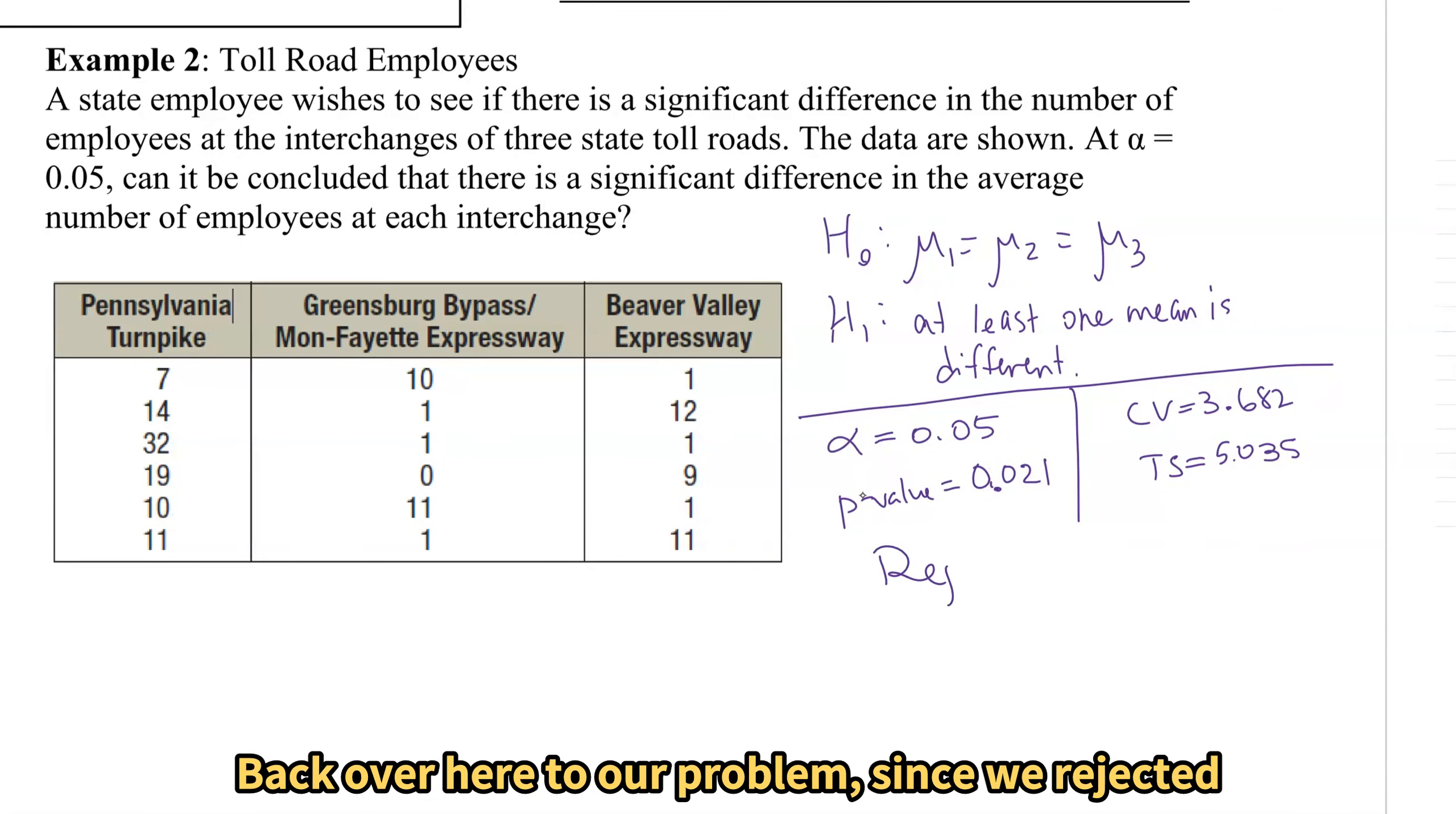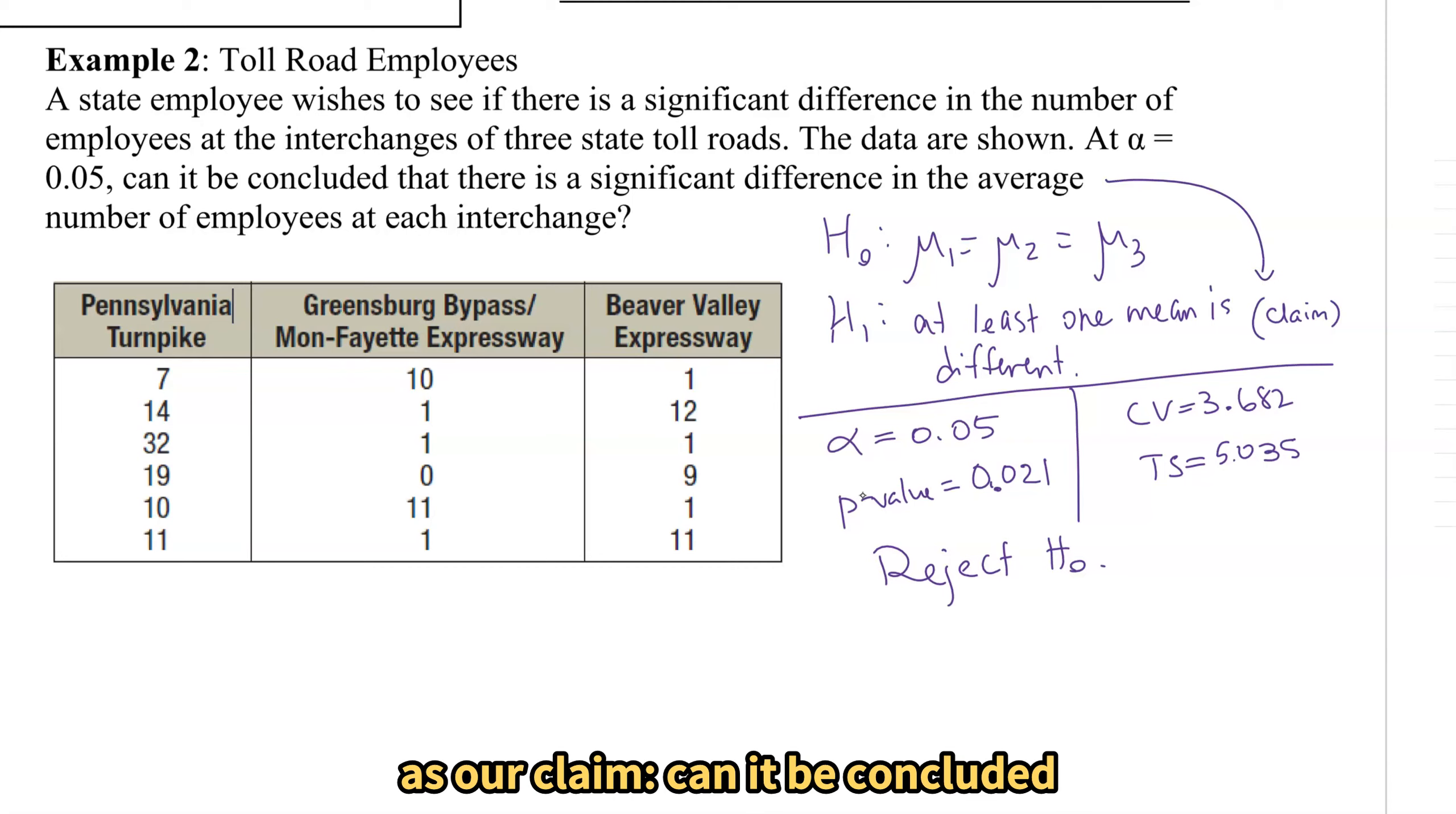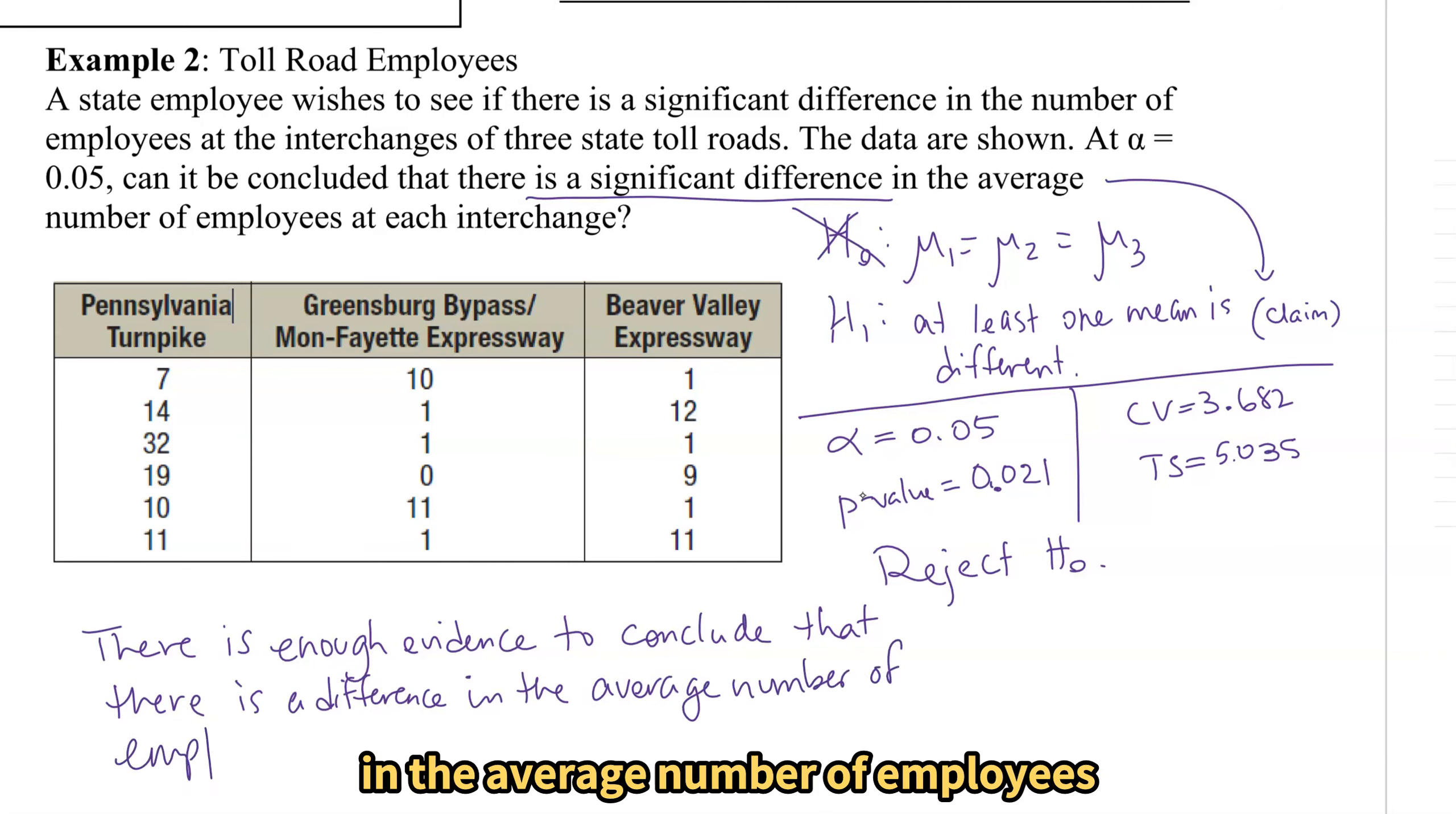Back over here to our problem. Since we rejected the null and it says, can it be concluded there is a significant difference? I forgot to put my claim up here. We are going to take that sentence as our claim. Can it be concluded there is a significant difference in the average number of employees? Because we rejected the null, that means our claim is holding. There is enough evidence to conclude that there is a difference in the average number of employees.